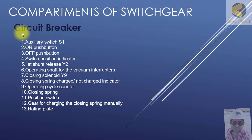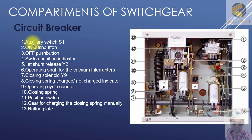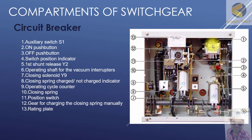Here you can see the circuit breaker and its different parts. Number one is auxiliary switch S1 — these are basically the replication contacts of the breaker.